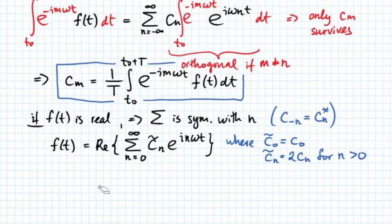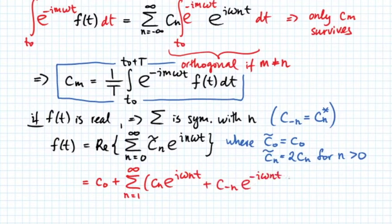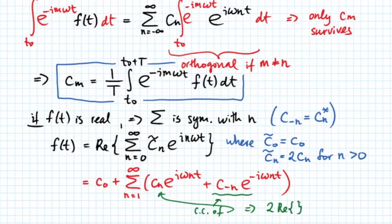We can see that this comes from rewriting the infinite series in terms of coefficient C0 plus sum from n equals 1 to infinity, given by C sub n, e to the i n omega t, plus C minus n, e to the minus i n omega t. This term here is complex conjugate of the first term, which will give us twice the real part of C sub n, times e to the i n omega t.